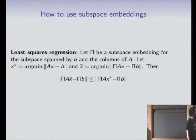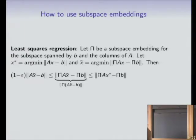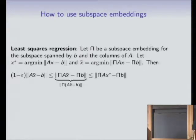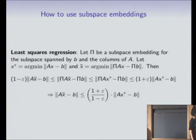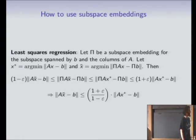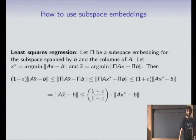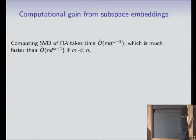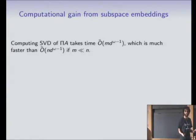X-star minimizes norm of Ax minus B; x-tilde minimizes norm of pi*A*x minus pi*B. Pi*A*x-tilde minus pi*B equals pi times this vector, which is in the subspace, so pi preserves its norm approximately. Doing the same on the other side, A*x-star minus B is also in the subspace. Moving the 1-minus-epsilon factors around, you get that x-tilde gives an approximately optimal solution. The point is I only need to do an SVD on pi*A, which is a much smaller matrix.